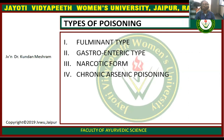Types of arsenic poisoning are of four types: 1. Fulminating type, 2. Gastroenteric type, 3. Narcotic type, and 4. Chronic arsenic poisoning.